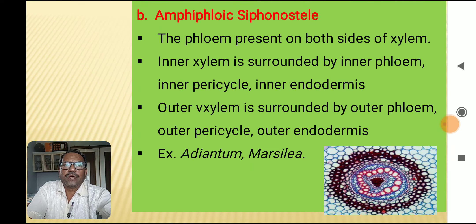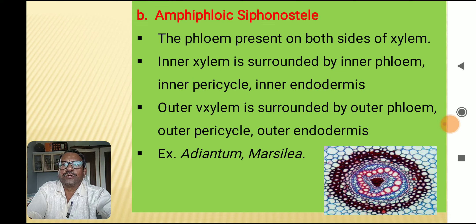In ectofloic siphonostele, the outer xylem is surrounded by outer phloem, outer pericycle, and outer endodermis. Examples include Adiantum and Marsilea.